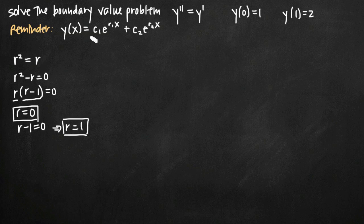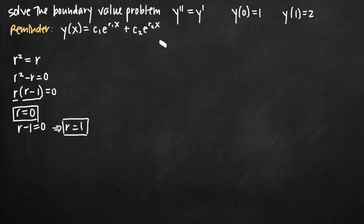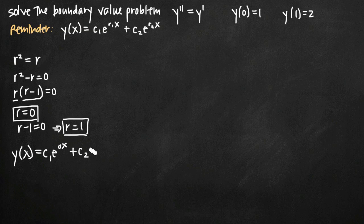When you have distinct real roots, you use the formula y(x) = c₁e^(r₁x) + c₂e^(r₂x) for the general solution to the second order differential equation. For equal real roots or complex conjugate roots you would use a different formula, but since we have distinct real roots, this is the formula we use. We plug our roots in for r₁ and r₂ — it doesn't matter which root goes where. So our general solution is y(x) = c₁e^(0·x) + c₂e^(1·x).